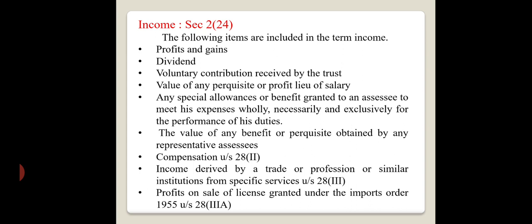As per Section 2 subsection 24, some items are to be considered as income under the Income Tax Act 1961. The first one is profits and gains — whatever profit is earned by an individual, from a firm, HUF, partnership firm, or company, or from a profession. Then dividend is called as income, and voluntary contributions received by a trust.